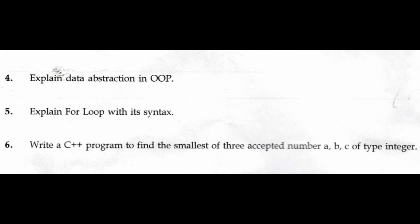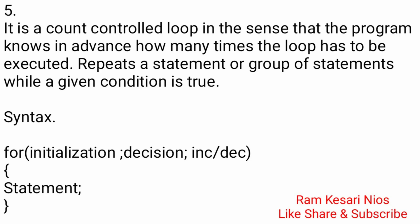Question 5: Explain for loop with its syntax. It is a count-controlled loop in the sense that the program knows in advance how many times the loop has to be executed. It repeats a statement or group of statements while a given condition is true. Syntax: for(initialization; decision; increment/decrement) statement.